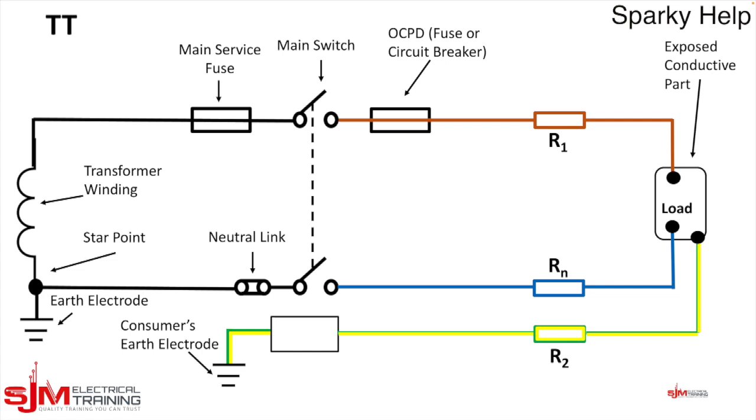We have the neutral link within the service cutout, the MET, which could be internal of the board or external depending on your installation, and then we have the earth conductor which connects from the MET to the earth electrode.